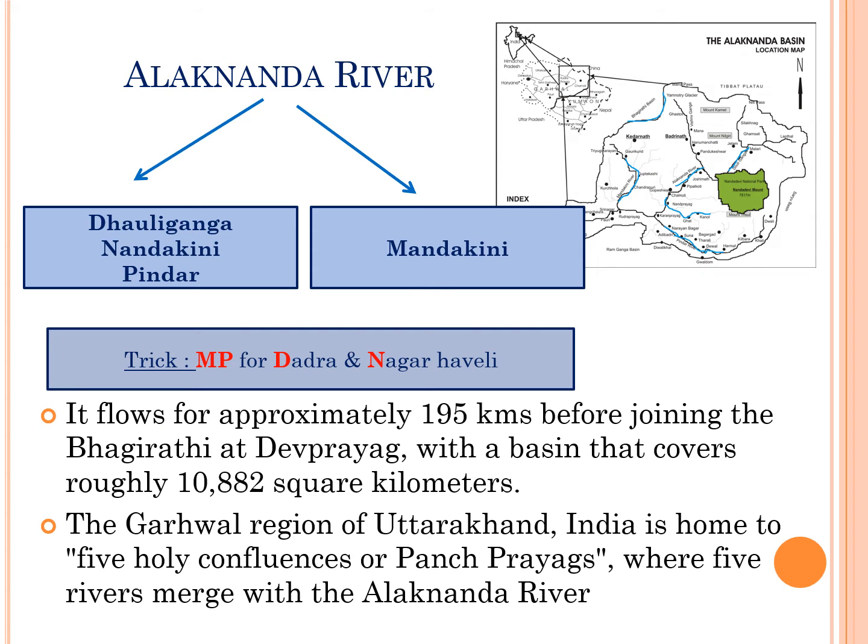Alaknanda river flows for approximately 195 kilometers before joining the Bhagirathi at Devprayag, with a basin that covers roughly 10,882 square kilometers. The left tributaries of Alaknanda river are Daliganga, Nandakini, and Pindar. The right tributary of Alaknanda river is Mandakini.